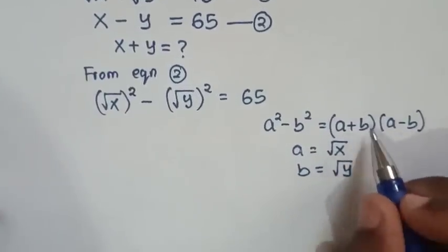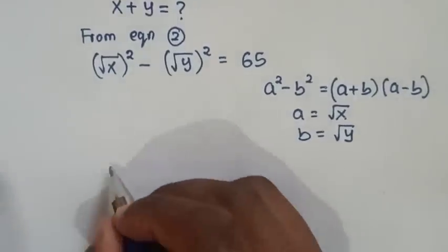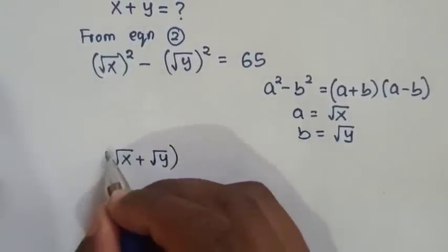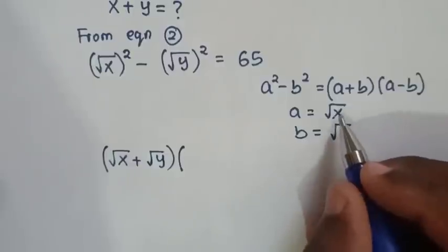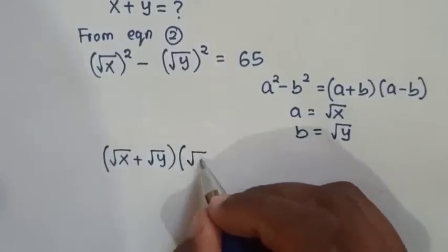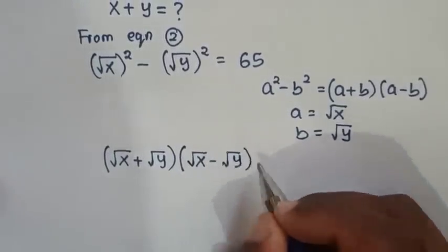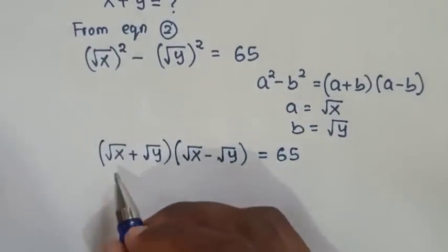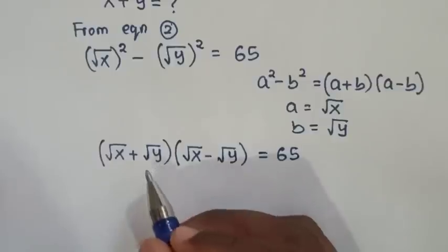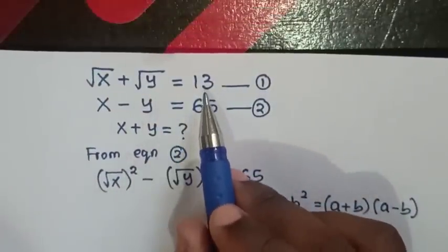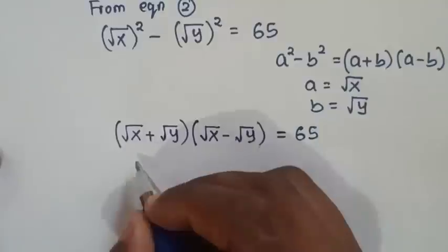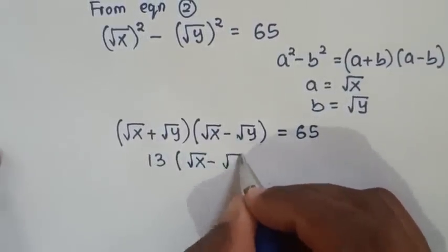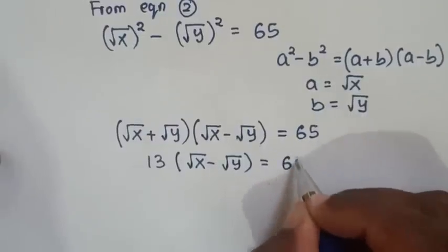Then a plus b becomes √x plus √y, and a minus b becomes √x minus √y. Now √x plus √y appears in equation 1, which equals 13. So we substitute 13, giving us 13 times (√x minus √y) equals 65.